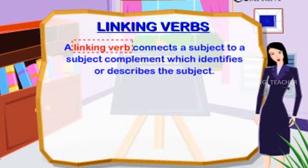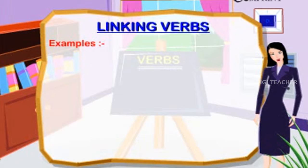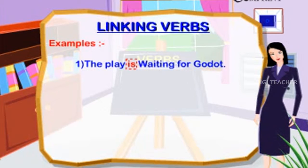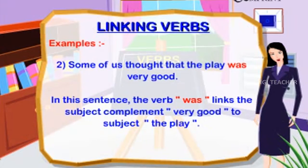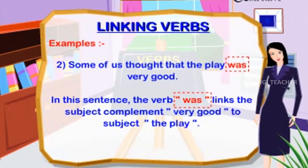Linking verbs connect a subject to a subject complement that identifies or describes the subject. Example: 'The play is Waiting for Godot' — the linking verb 'is' links the noun phrase 'the play' to the identifying phrase 'Waiting for Godot,' called a subject complement. Example: 'Some of us thought that the play was very good' — the verb 'was' links the subject complement 'very good' to the subject 'the play'.